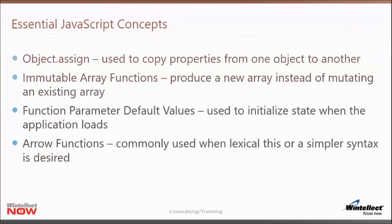What is object.assign? It's basically used to copy properties from one object to another — it's an implementation of the mixin pattern for JavaScript. You'll use object.assign all the time in your reducer functions to produce new state objects and copy over properties from the original object that were not changed. As for immutable array functions — there's a lot of immutable operations you can do in plain JavaScript using slice and concat, as opposed to push, pop, or splice.